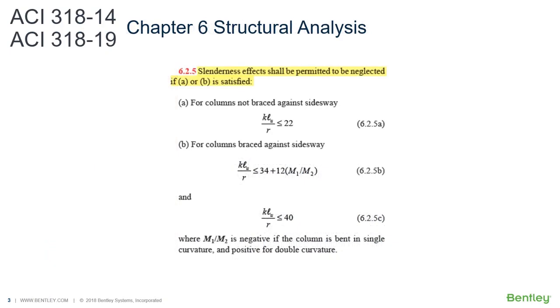In ACI 318-14, the analysis requirements for concrete structures have been clarified and consolidated in Chapter 6. A particularly important requirement is given by Section 6.2.5, which indicates when slenderness effects can be ignored.